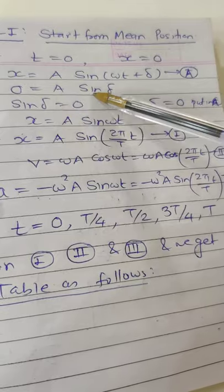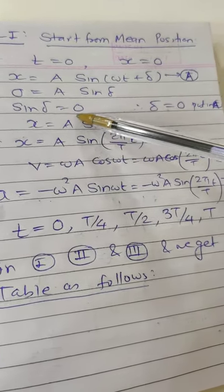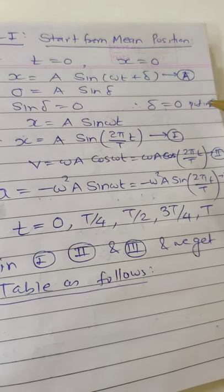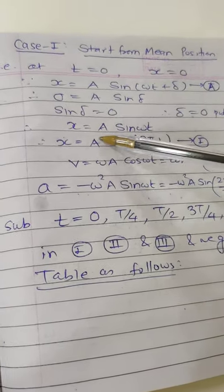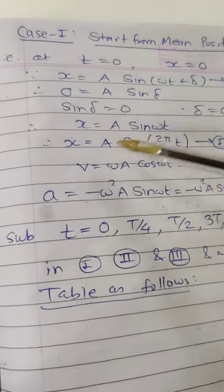So 0 equal to A sin δ, therefore sin δ is 0, that means δ equal to 0. Substitute this in equation A, so what I'll get: therefore x equal to A sin ωt. Now omega can be written as 2π/T, so A sin(2πt/T).